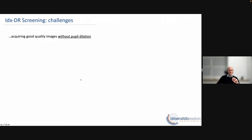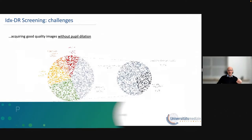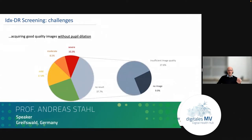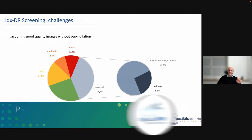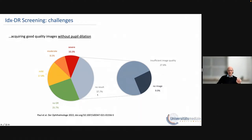The challenges, however: we try to get good images without pupil dilation. Ideally you don't want to apply eye drops when there's no ophthalmologist around. So we do it without pupil dilation, and that is a significant downside — in around a third of patients we don't get good quality images. This has nothing to do with the AI algorithm itself; it's just the difficulty of obtaining good images for the AI to work with.